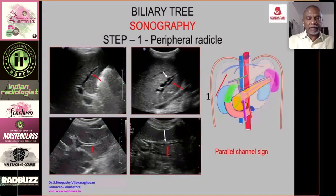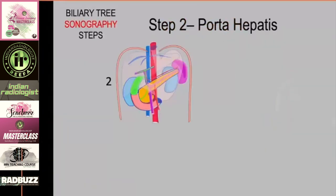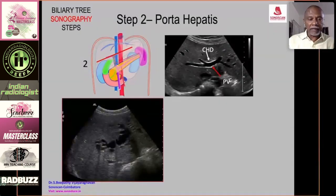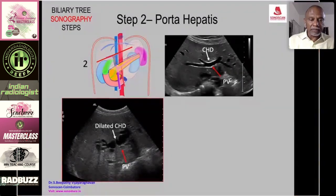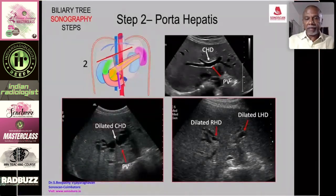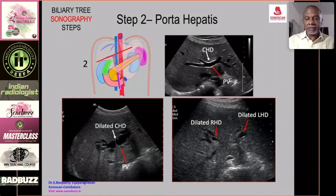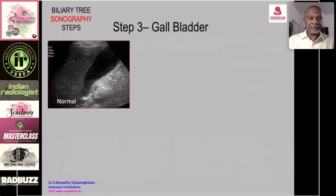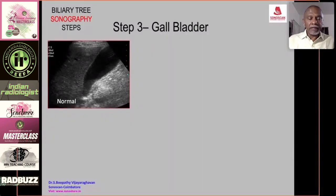Step two — transverse scan along the bifurcation of the portal vein: normally you see the right and left branches of the portal vein and the right and left hepatic ducts anterior to them, which are very thin and usually not seen. When dilated, you see the dilated right and left hepatic ducts and common hepatic duct anterior to the portal vein. If at the confluence there is an irregular ill-defined mass, this is typical of cholangiocarcinoma.